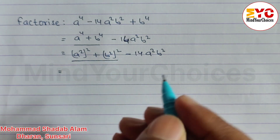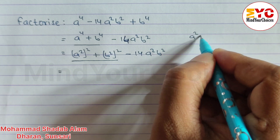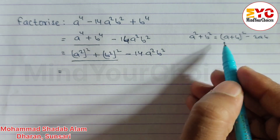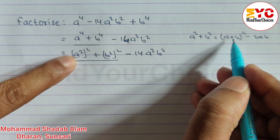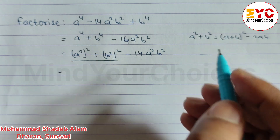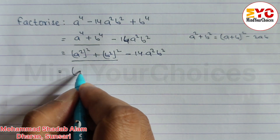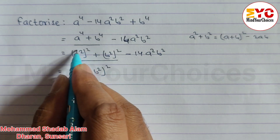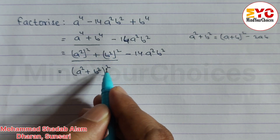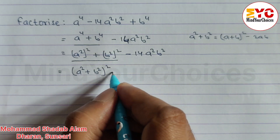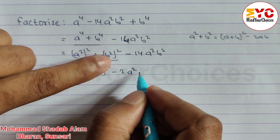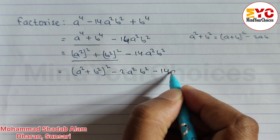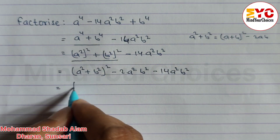Now we use the formula for a square plus b square: a square plus b square equals a plus b whole square minus 2ab. In place of a we have a square, and in place of b we have b square. So a square plus b square whole square equals a square plus b square whole square minus 2 times a square times b square, and then minus 14 a square b square.